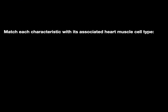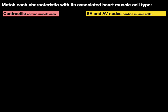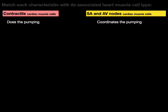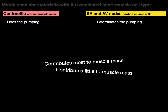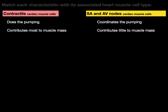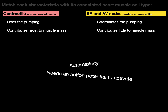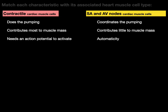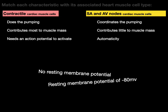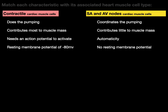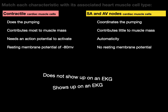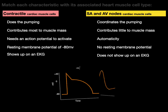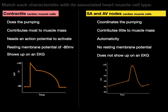Let's practice by matching each characteristic with its associated heart muscle cell type — contractile versus SA/AV nodal. Contractile cells do the pumping; nodal cells coordinate the pumping. Contractile cells contribute to muscle mass (99%); nodal cells have little muscle mass. SA and AV nodal cells have automaticity; contractile cells need an action potential. Nodal cells have no stable resting membrane potential, giving them automaticity, while contractile cells have a resting membrane potential of negative 80 millivolts. Contractile cells show up on an EKG. The associated action potentials will be discussed in a future video.